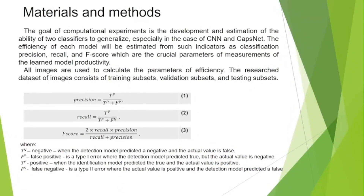The goal of the computational experiments is the development and estimation of the ability of two classifiers to generalize. The efficiency of each model will be estimated using such indicators as classification precision, recall, and F-score, which are the crucial parameters for measuring model productivity.